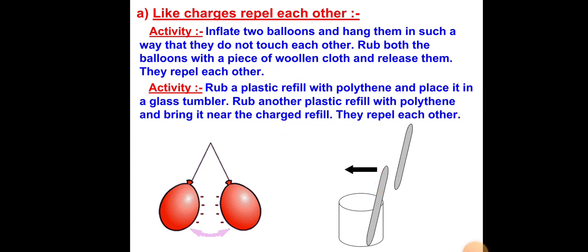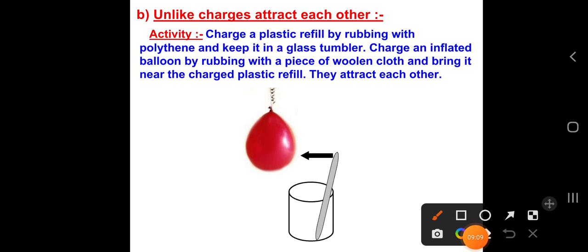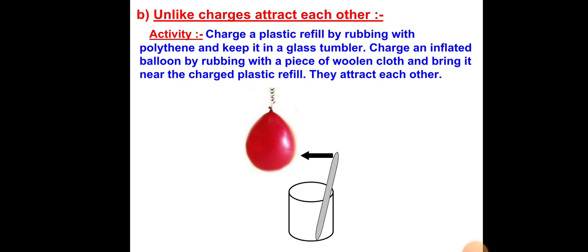This proves that same kind of charges repel. For unlike charges: charge a plastic refill by rubbing with polythene and keep it in a glass tumbler, then charge an inflated balloon by rubbing with a piece of woolen cloth and bring it near the plastic refill — they attract each other because they are of different kinds and have different types of charges.